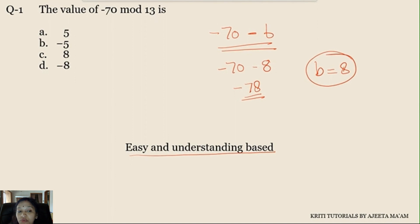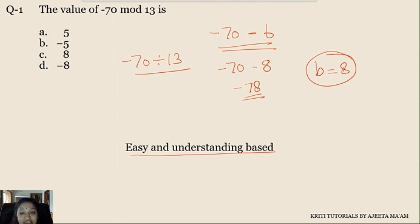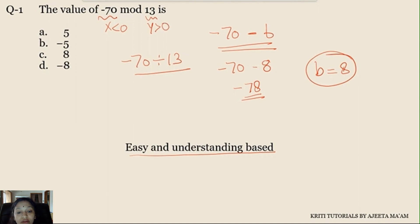That is what the remainder should be if you are dividing -70 by 13. Mod is nothing but -70 divided by 13. The positive multiples are 65 and 78, but x, that is -70, is less than 0 and y is greater than 0, therefore the remainder comes out to be 8. It's a simple question which will hardly take a few seconds in an exam — no calculation needed.